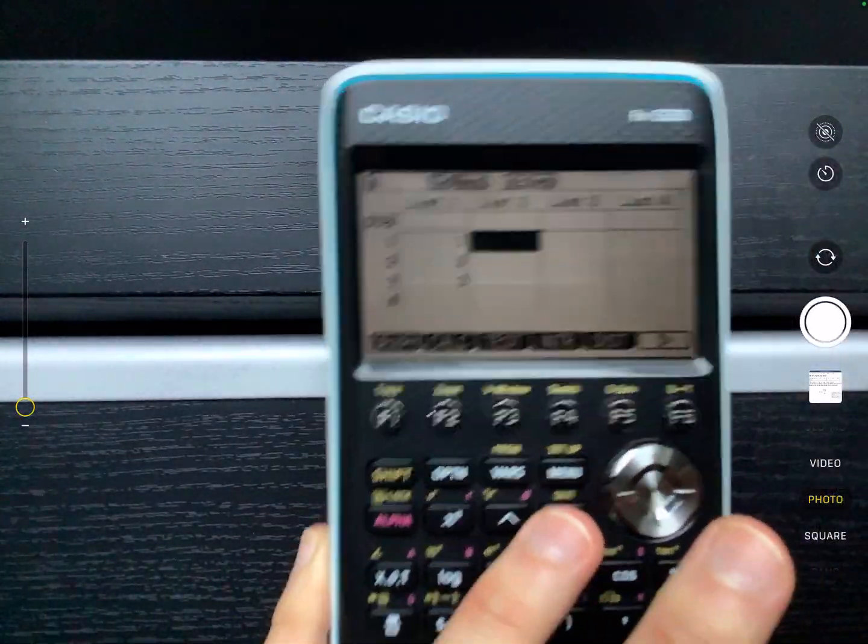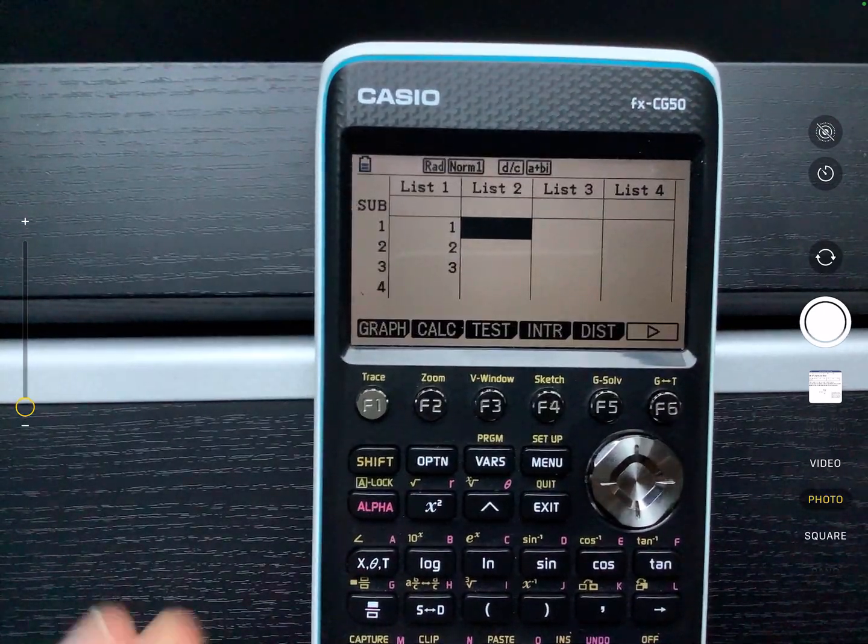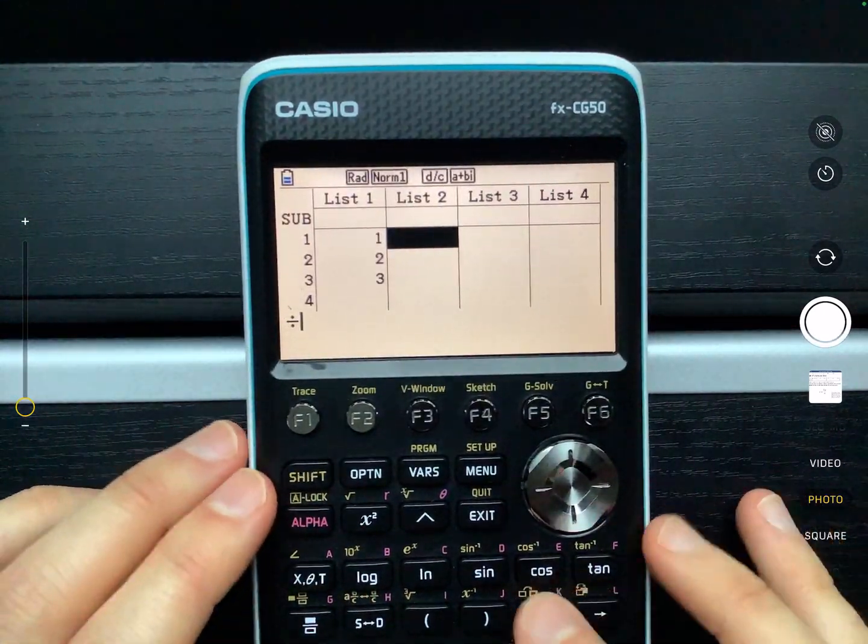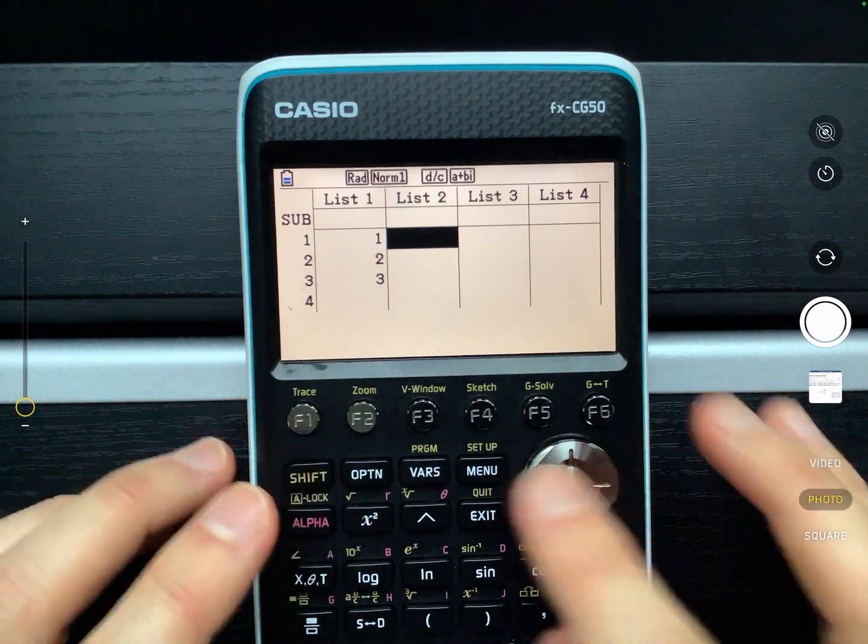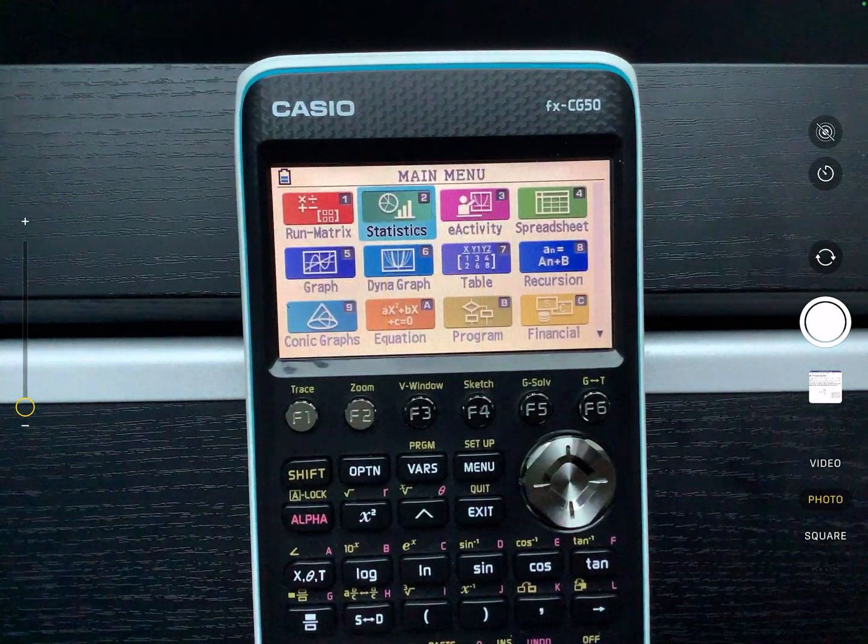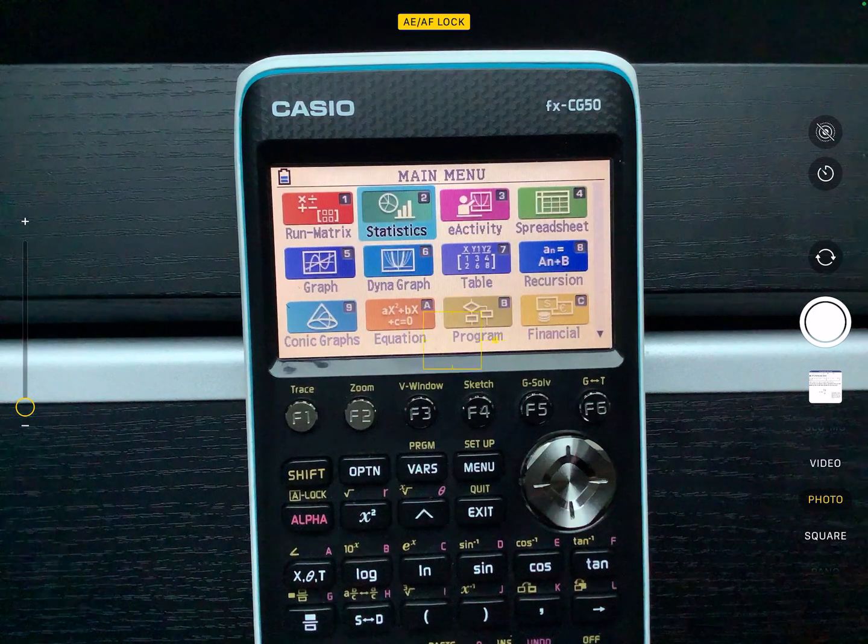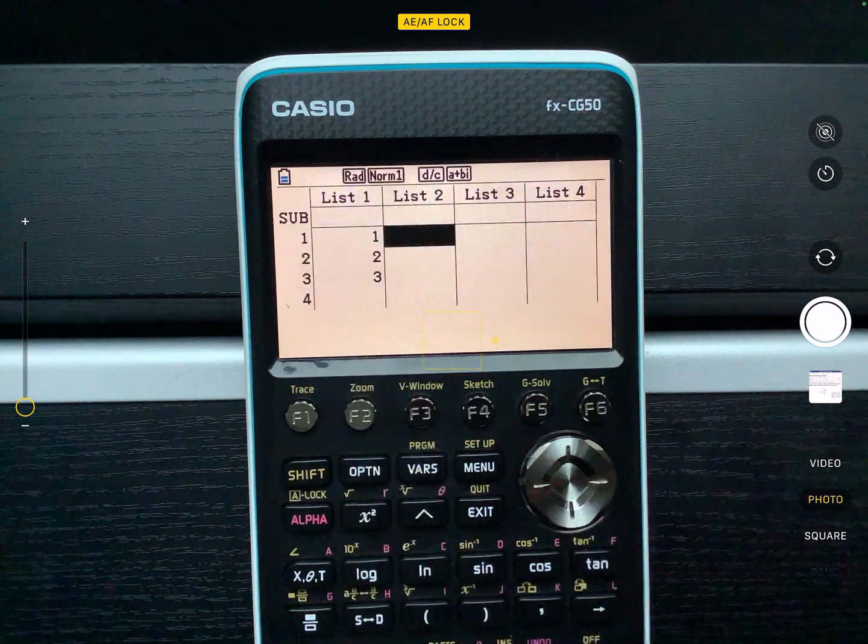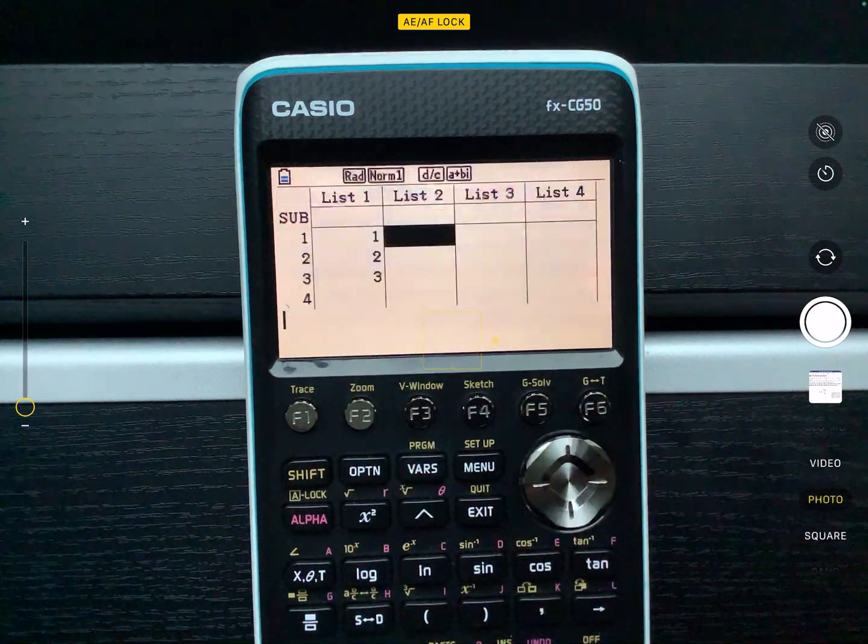OK, and so here is my graphics calculator. So what you need to do is, first of all, you'll go to your menu and you're going to go to the statistics part that you've got here. You can either press 2 or you can just scroll along to the bit and get to it.